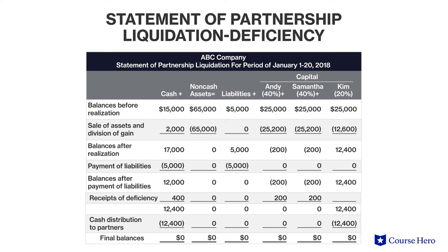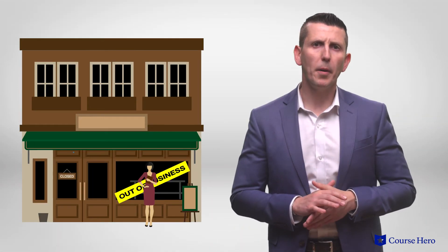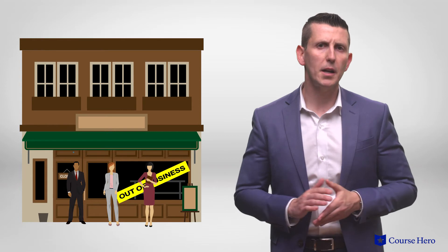The partnership then pays off its outstanding debts of five thousand dollars and proceeds to make a final distribution to the partners, at which point the partnership only has twelve thousand dollars of cash. However, Kim is entitled to twelve thousand four hundred dollars, while Andy and Samantha should each pay in two hundred dollars to make up their deficit. Assuming both pay, the cash goes up by four hundred dollars, allowing the partnership to pay Kim her entire capital account balance.